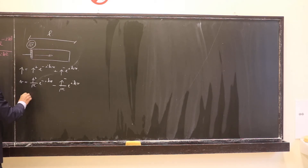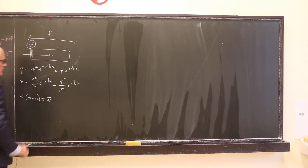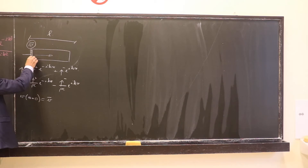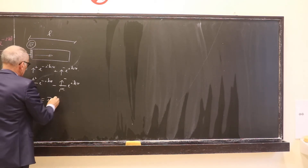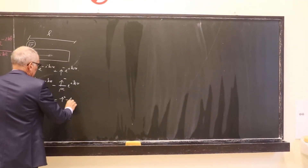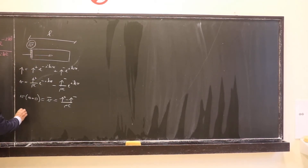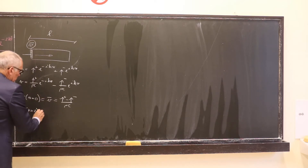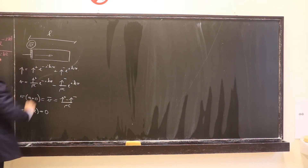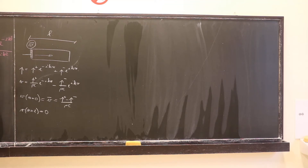We just have to express two boundary conditions: that the velocity at x equal to zero is equal to the velocity of the piston, meaning that the particle of air in contact with the piston moves with the piston, so that we have (p+ minus p-) over ρc is equal to v. And that the velocity at x equal to l is equal to zero, because we have assumed a rigid termination, so that particles cannot get in and out of the duct.